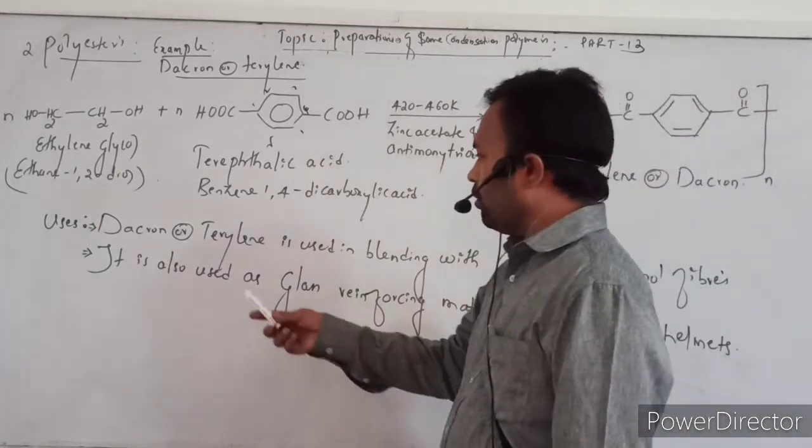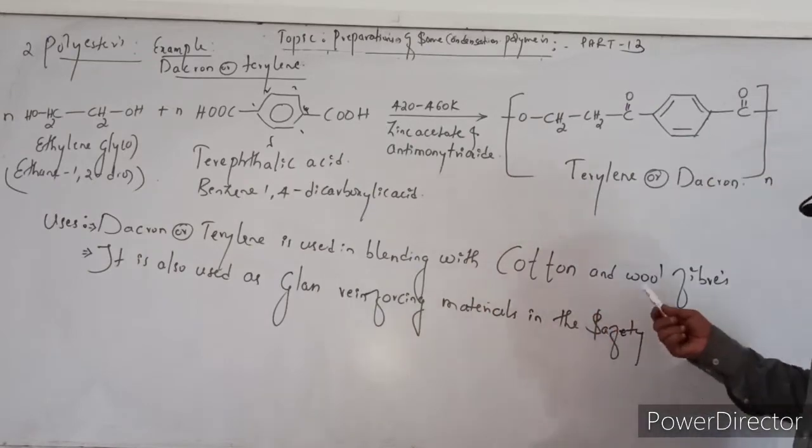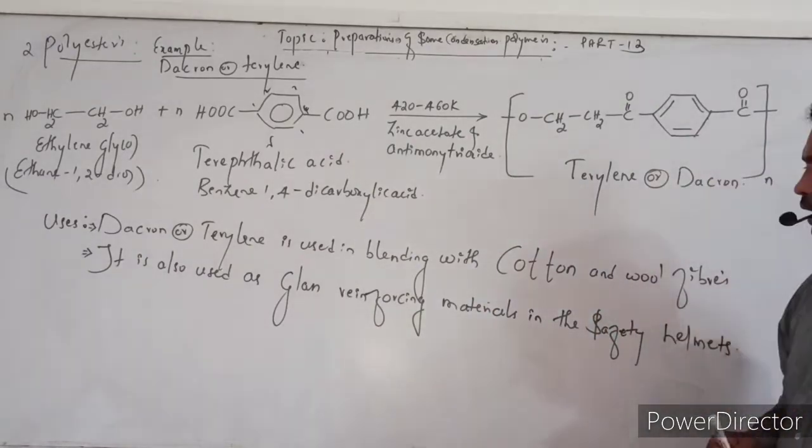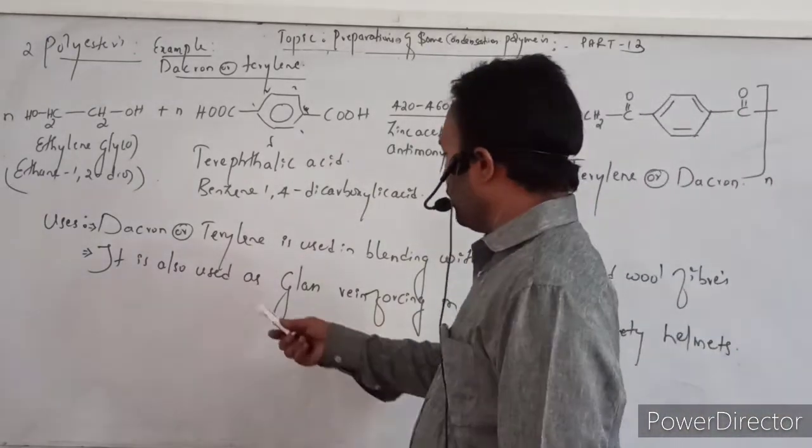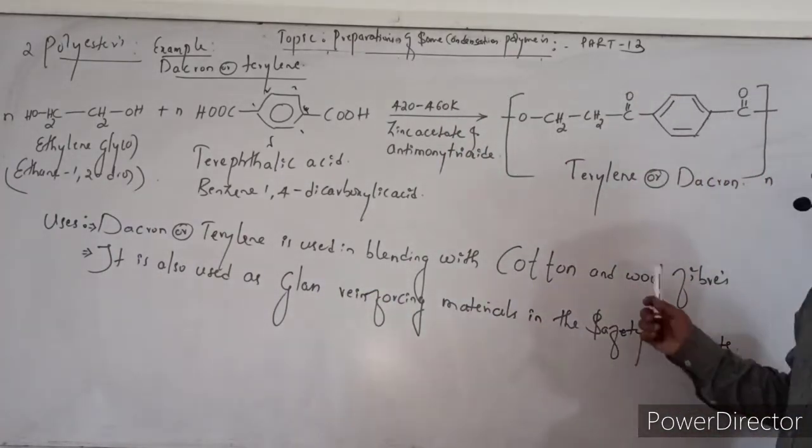Uses of this Dacron: Dacron, sometimes also called Terylene, is used in blending with cotton and wool fibers. And this Terylene or Dacron is also used as a glass reinforcing material in safety helmets.